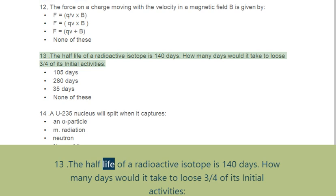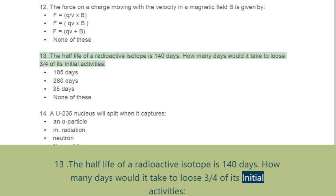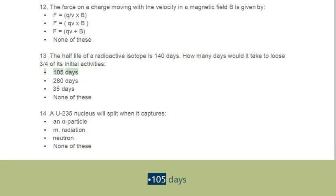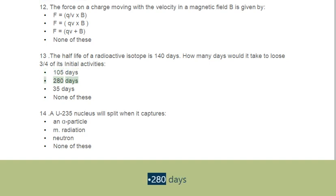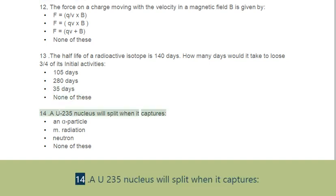Question 13: The half-life of a radioactive isotope is 140 days. How many days would it take to lose 3/4 of its initial activity? Options: A. 105 days, B. 280 days, C. 35 days, D. None of these.